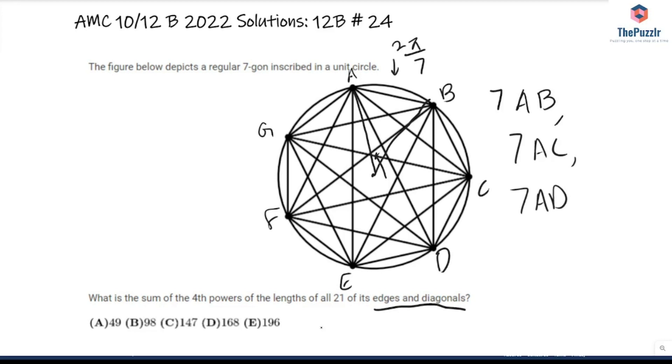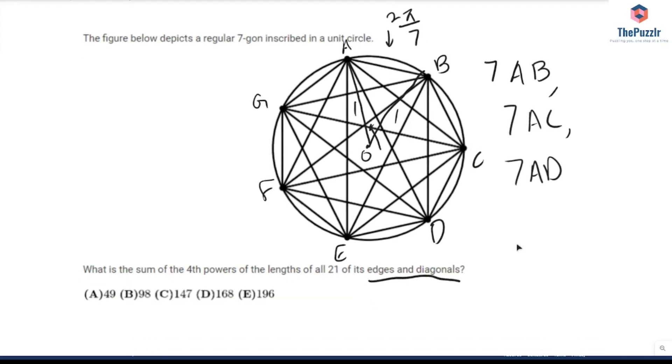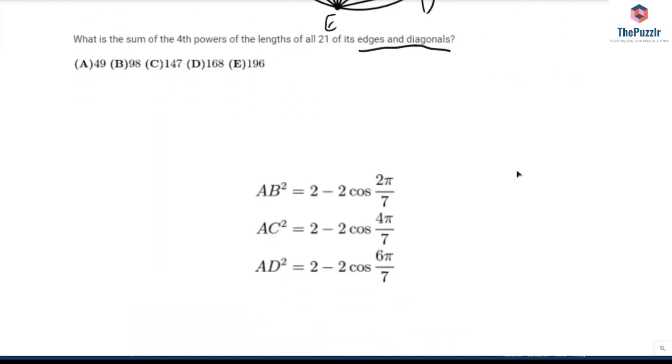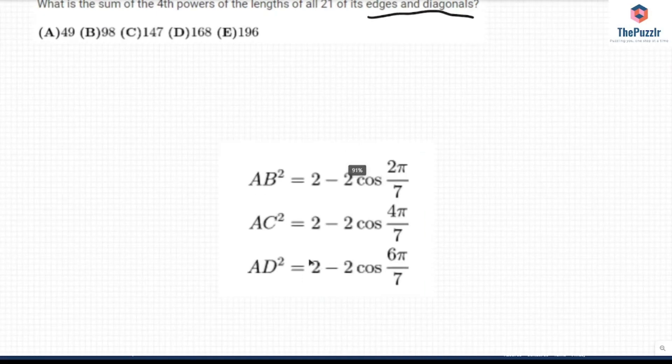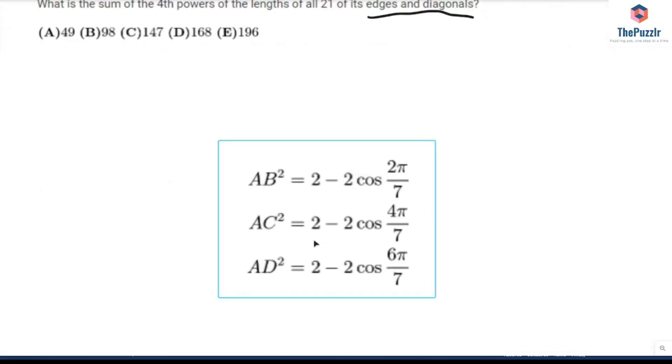And we know that since it's a unit circle, if I call the center O, AO equals 1 and BO equals 1. So that lets me use the law of cosines to solve this problem. I'm using the law of cosines. What I get for each of the three sides is that AB squared equals 2 minus 2 cosine 2π over 7. AC squared equals 2 minus 2 cosine 4π over 7.